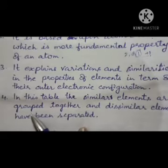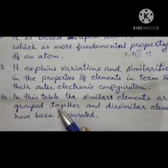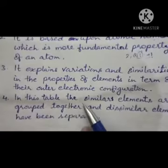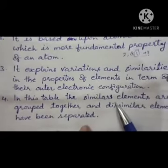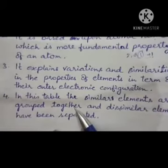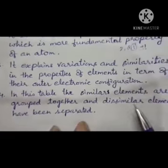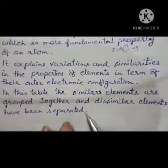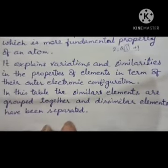The fourth point is that in the modern periodic table, similar elements are grouped together and dissimilar elements have been separated.